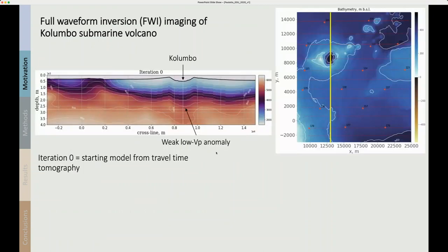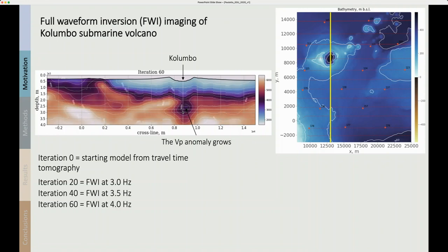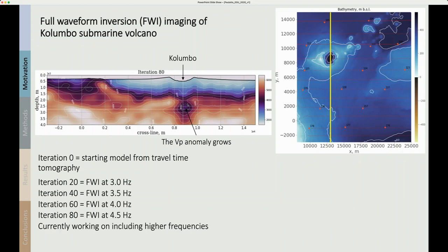This was our starting point. This is the output of the travel time tomography and is the starting model for the full waveform inversion. I'm showing a cross section across Columbo volcano. Columbo on the seabed looks like a little 500 meter wide crater. There's a weak low Vp anomaly that we can see from travel time tomography but nothing to make us suspect the presence of melt. After full waveform inversion at three hertz the Vp anomaly has grown considerably and it's now quite significant. And as we progress including higher frequency in the inversion until we invert frequencies up to 4.5 hertz, that low Vp anomaly has come into sharp focus and it's really quite a significant feature. We're currently working on including higher frequencies and this will sharpen the image even further.